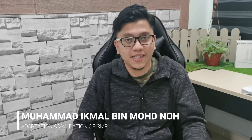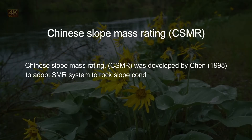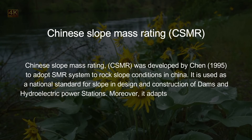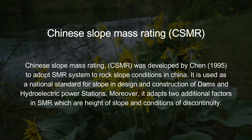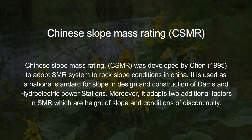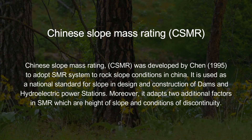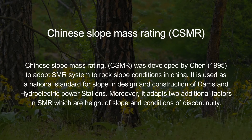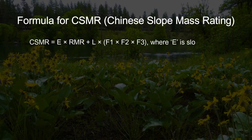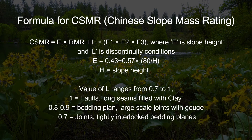Regarding adaptation and validation of SMR: the first item is Chinese Slope Mass Rating (CSMR), developed by Chen in 1995 to adapt the SMR system to road slope conditions in China. It is used as a national standard for slope design and construction of dams and hydroelectric power stations. It adds two additional factors to SMR: height of slope and condition of discontinuity.